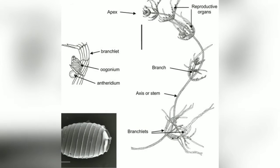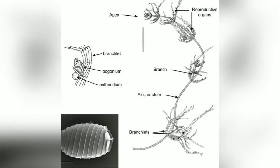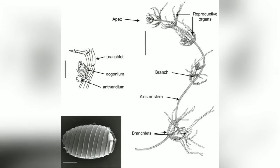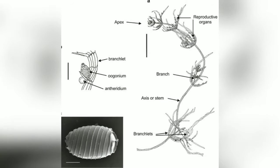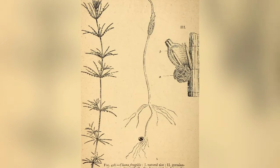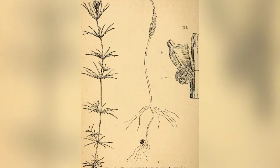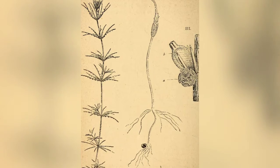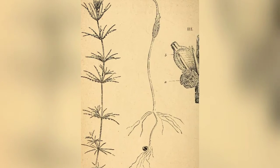Each disc-shaped cell divides transversely to form an upper biconcave nodal initial and a lower biconvex internodal initial.